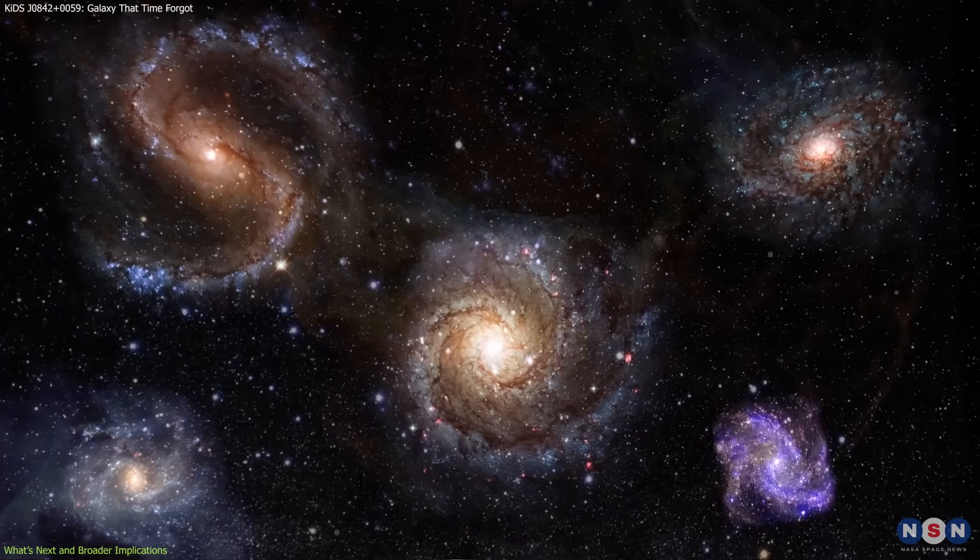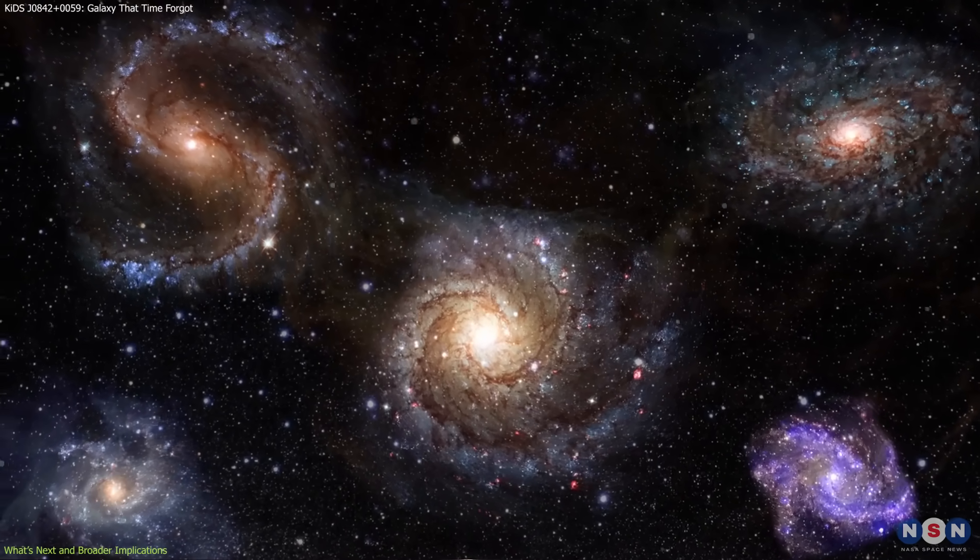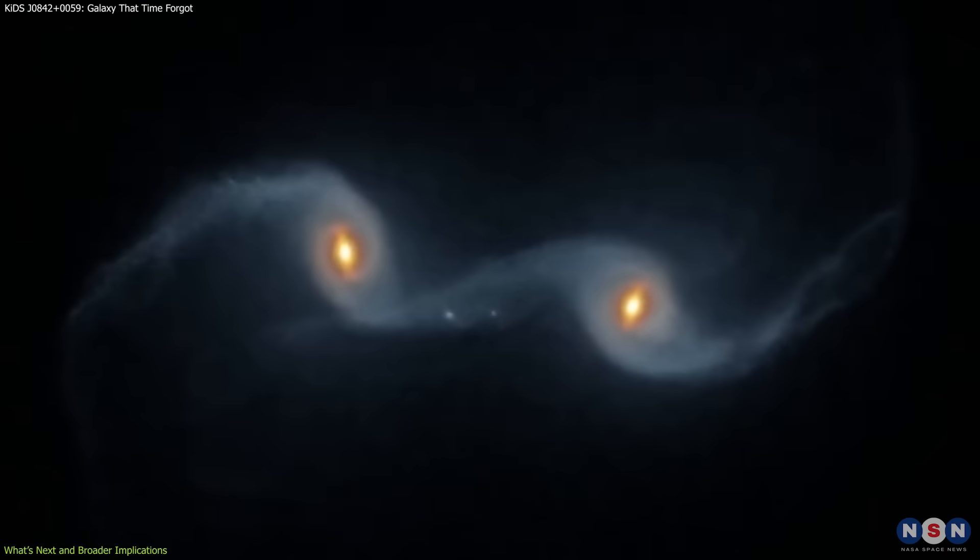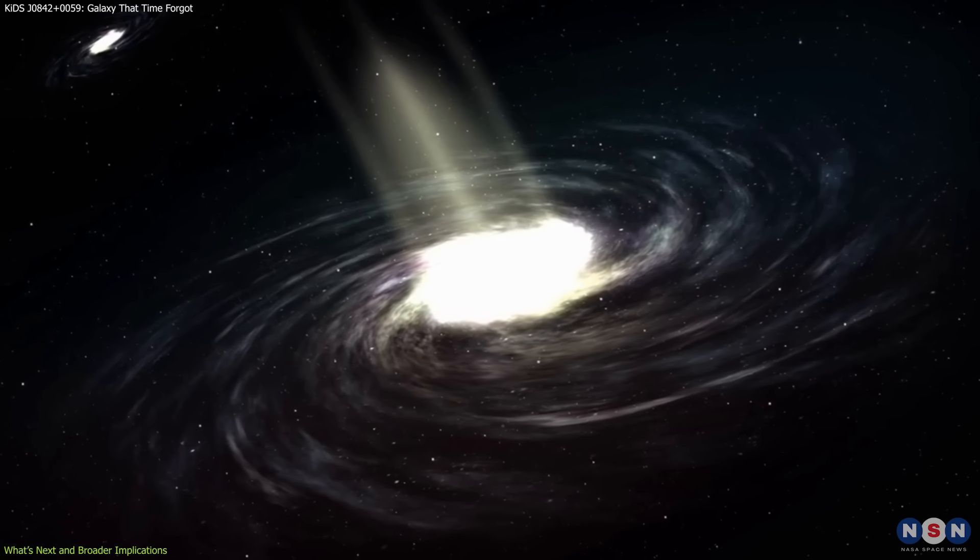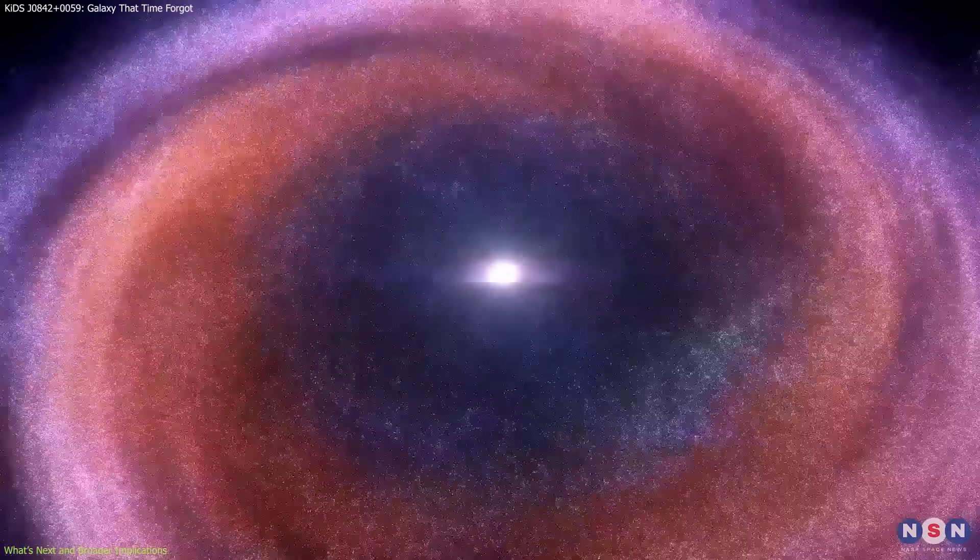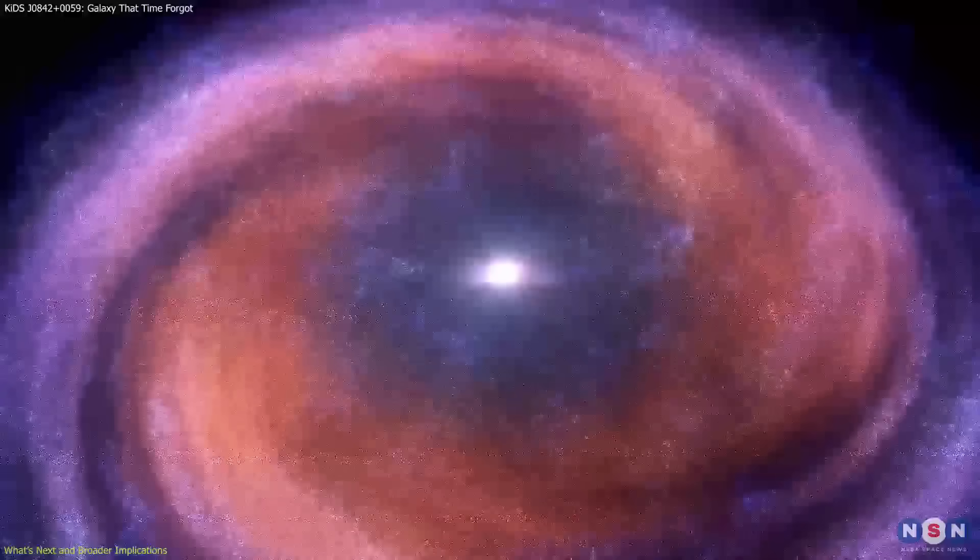Additionally, these galaxies provide baselines for interpreting more complex systems. Galaxies with merger histories often have overlapping signals from different epochs. Relic galaxies, with their simpler structure, can act as reference templates, helping to deconstruct the evolutionary history of more active galaxies.